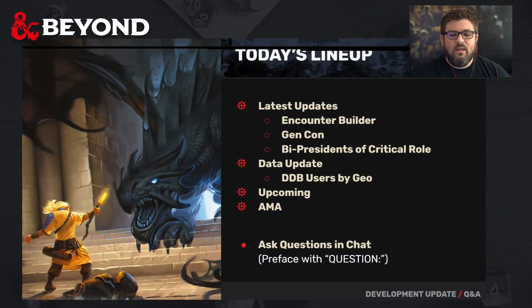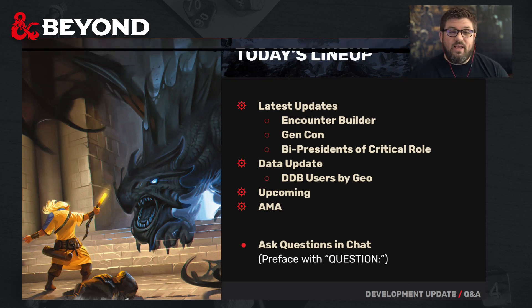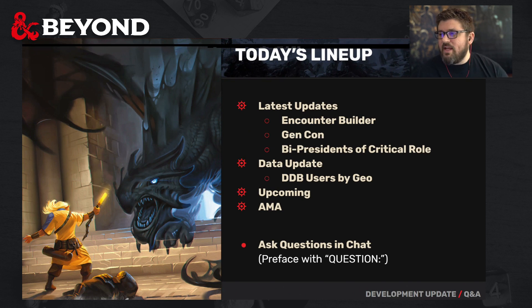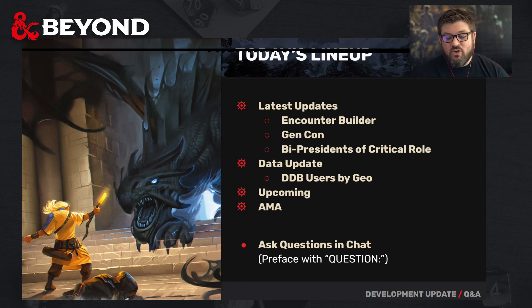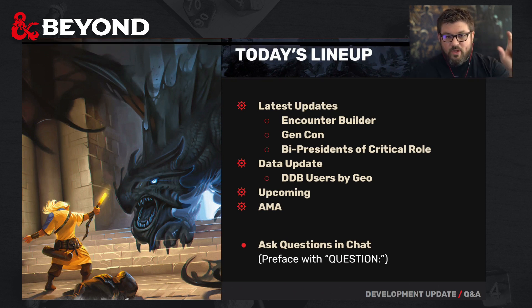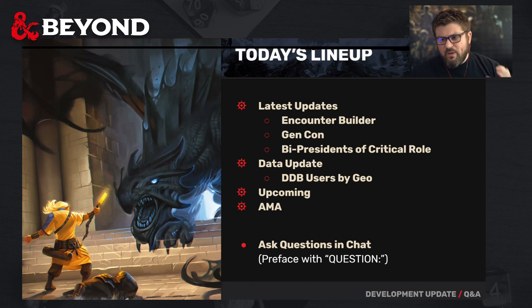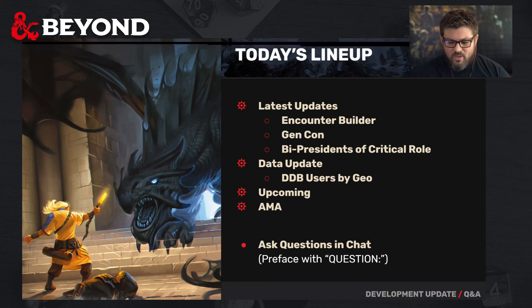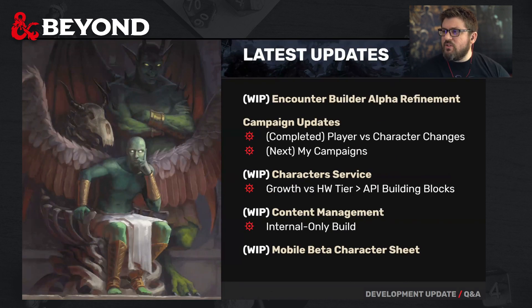We're going to jump right in. Today's lineup: we're going to talk about our latest updates, what's going on with the Encounter Builder, share a little bit about Gen Con. We do have the bi-presidents coming from Critical Role of our party planning committee. We've got a data update — D&D users by geographic location. We got that question many times, so we're going to share that today as well.